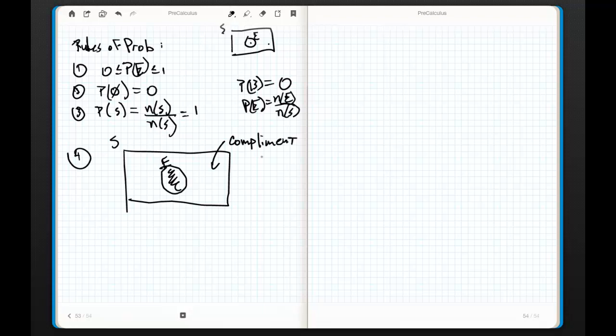And the notation for this is E bar, sometimes you'll see it as E prime, other ways to denote this are E prime, sometimes you'll see it as the complement, there's this little script C of E. They all mean the same thing, they are the complement.